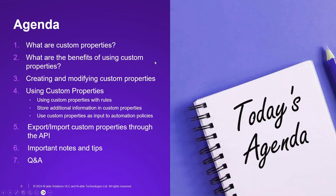On the agenda for today: what are custom properties, what are the benefits of using custom properties, creating and modifying custom properties, using custom properties in automation with a couple of examples, using automation with custom properties in rules, storing information in N-central, using custom properties as an input for automation, exporting and importing custom properties through the API, and tips and tricks at the very end. This bootcamp will run about 45 to 50 minutes.